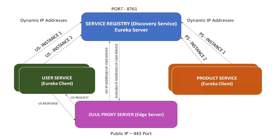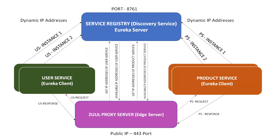The user service sends the response back, and the Zuul proxy server serves the response to the client. The same thing happens when a request comes for the product service — the Zuul proxy server communicates with the service registry, which returns the list of available IP addresses of product service. The Zuul proxy server does load balancing, sends the request to the product service, and the product service sends the response back through the Zuul proxy server to the client.